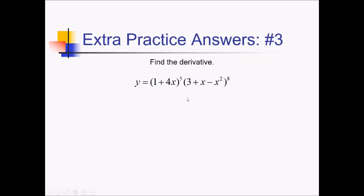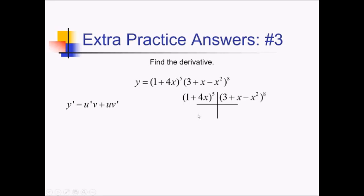To find the derivative of this function, I'm going to have to use the product rule, so u'v plus uv'. For my box and ribbon, I've got my first factor, 1 plus 4x to the 5th, and the other factor is all this craziness here. Now I need their derivatives, which will both require chain rules. So we've got 5 times 1 plus 4x to the 4th, times the derivative of 1 plus 4x, which is 4.